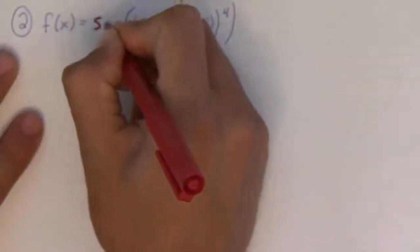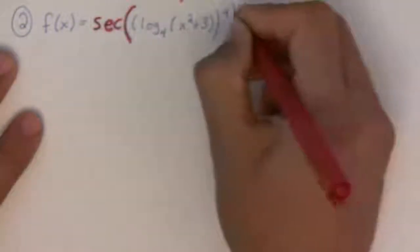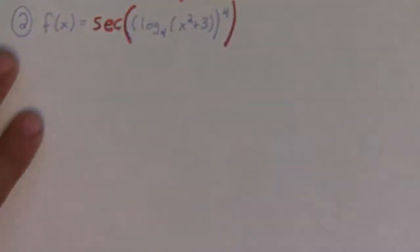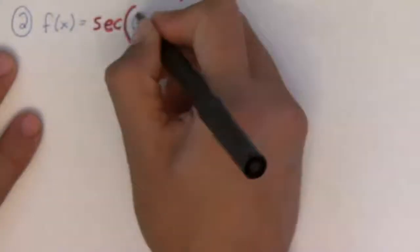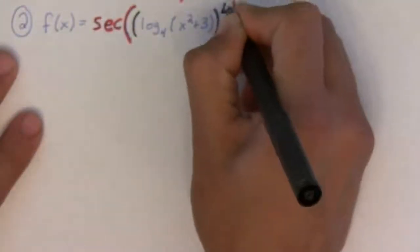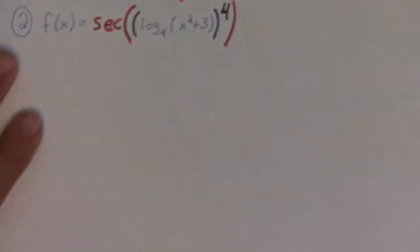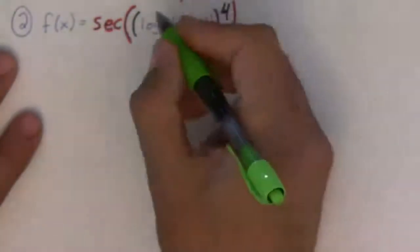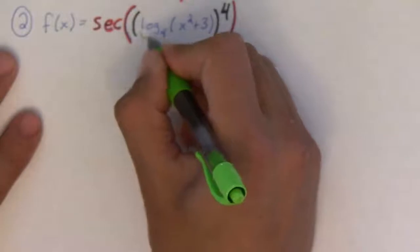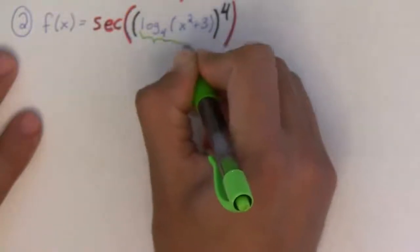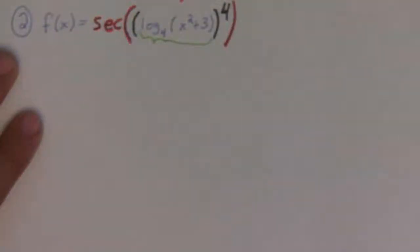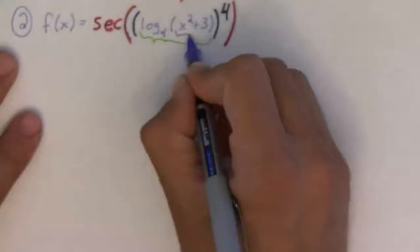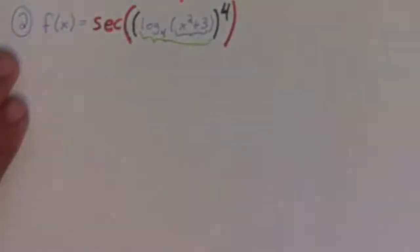So, the most outside function is secant of this entire thing. Then, inside of that, we have our next function. This guy is being raised to the fourth power. Okay. And inside of that, we have the log function. Log base 4 of this guy. And, last not least, we have this guy. The inside of the log.